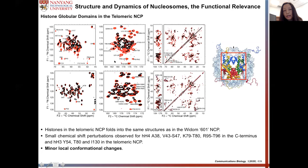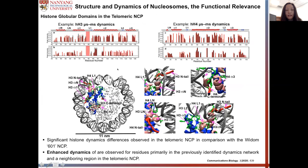We also performed dipolar-based experiments looking at the globular domain of the histone core in the nucleosome. The data shows that there are minor local conformational changes in the core regions of the telomeric NCP compared to the 601 NCP. When we look at the dynamic properties in the microsecond to millisecond timescale, we observe that many residues in the telomeric NCP show enhanced mobility.